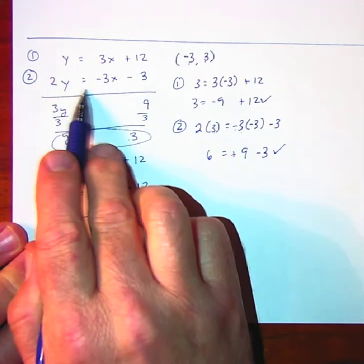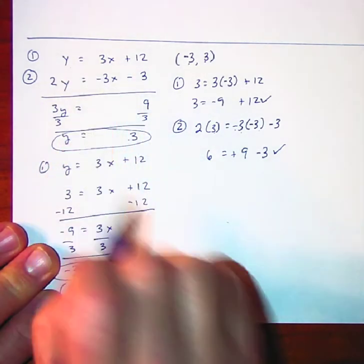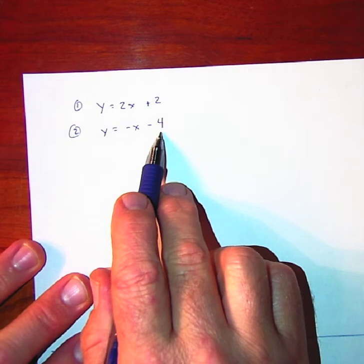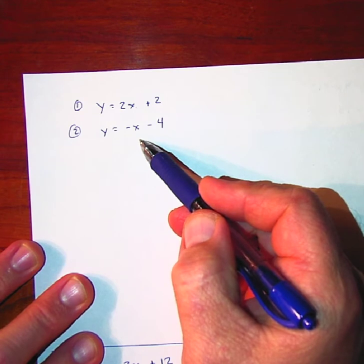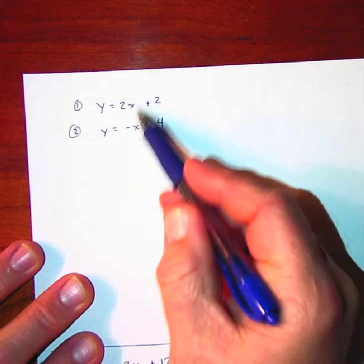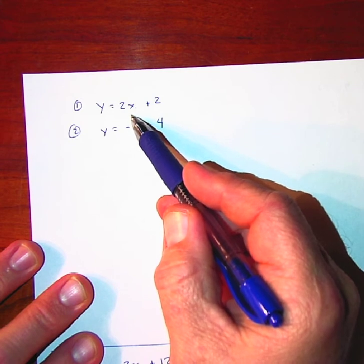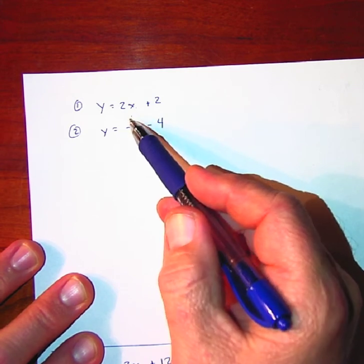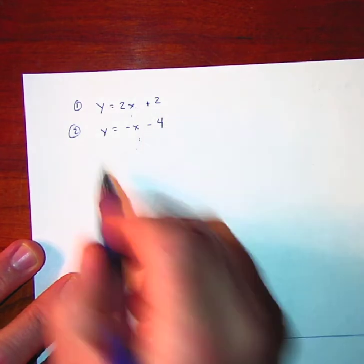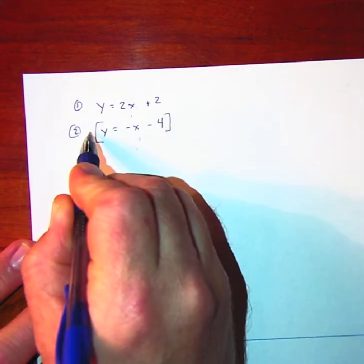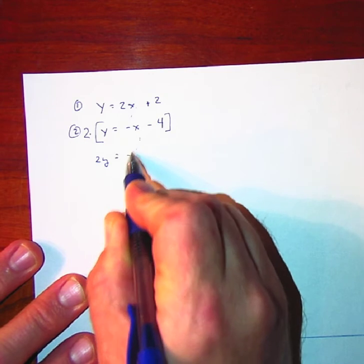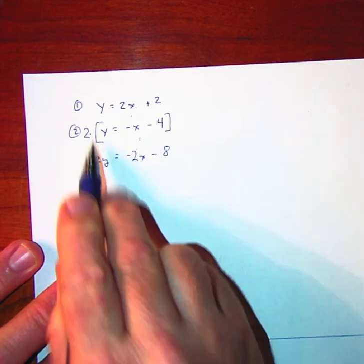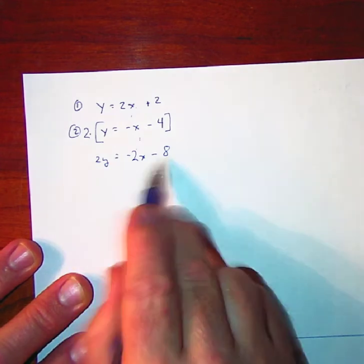It's not very frequent that the equations line up where one will eliminate from the other directly. It's more likely that you'll see a problem such as this. Here you have 1x positive and the other negative. To eliminate 2x, you would add negative 2x. I've got negative 1x, so I'll take the second equation and multiply it by 2, giving 2y is equal to negative 2x minus 8.